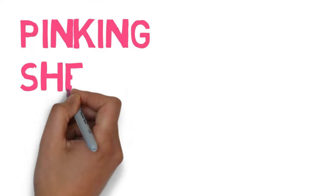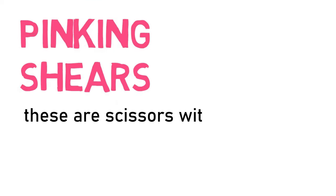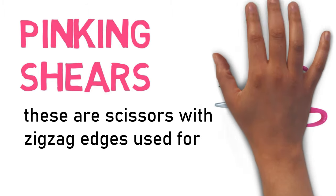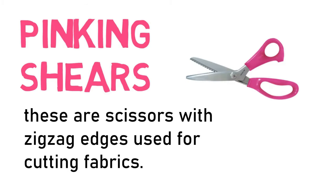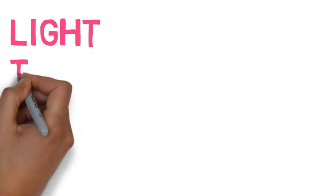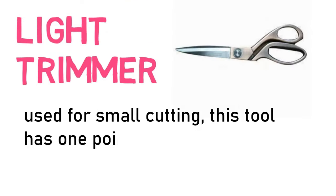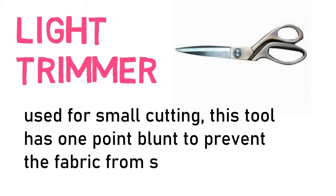Pinking shears. These are scissors with zig-zag edges used for cutting fabric. Light trimmers. Used for small cutting. This tool has one point blunt to prevent the fabric from snagging.